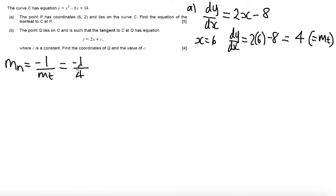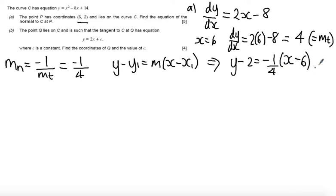Having got my gradient for my normal, I've got a point up here, which is 6, 2. So I can use y minus y1 equals m times x minus x1 in order to find the equation of my normal. So substituting my values in, I get y minus 2 is equal to minus 1 quarter times x minus 6. I don't want to deal with fractions for the time being, so I'm just going to multiply everything by 4. So I get 4y minus 8 is equal to minus 1 times minus 6 gives me plus 6, minus 1 times x gives me minus x.